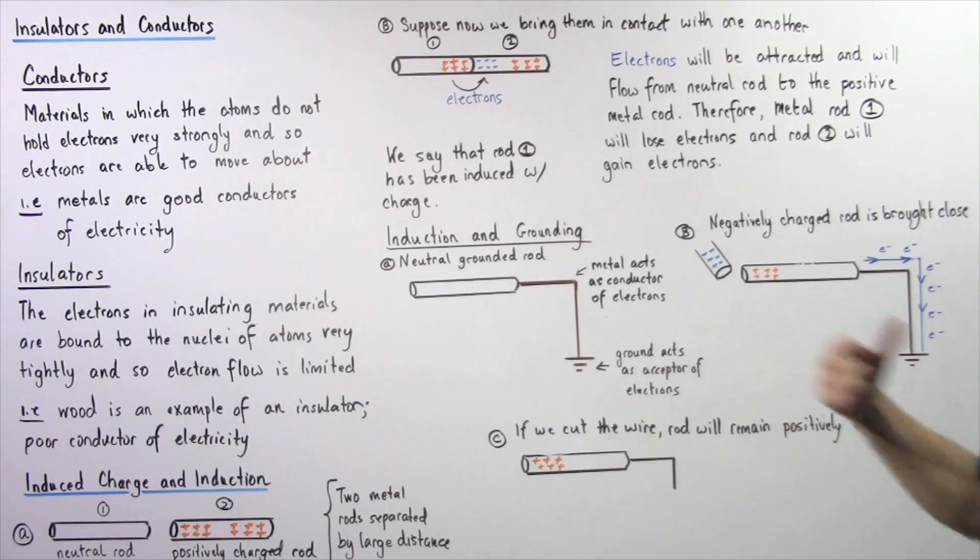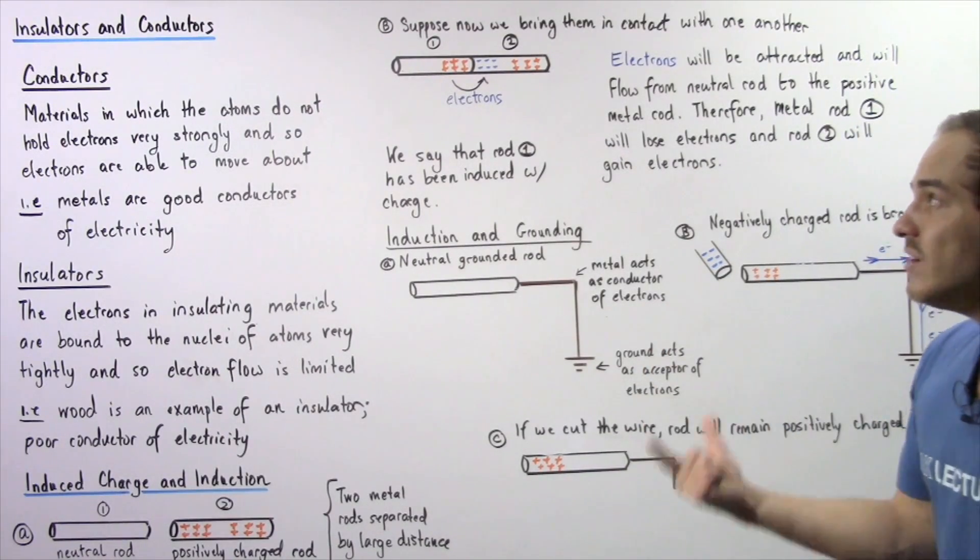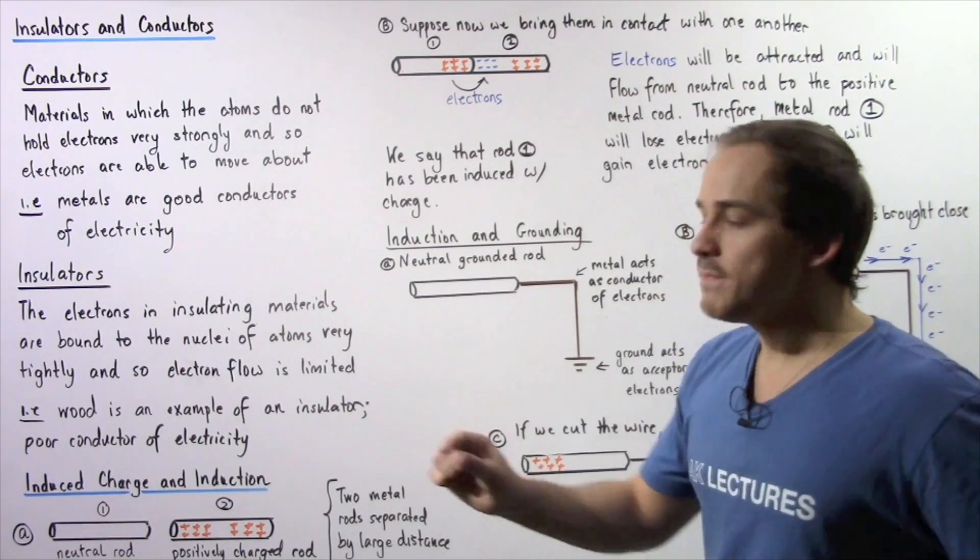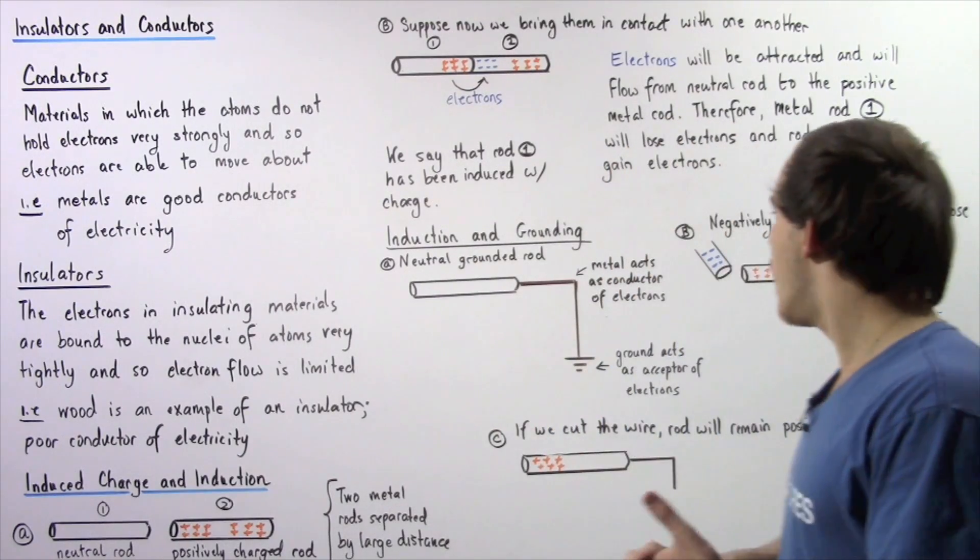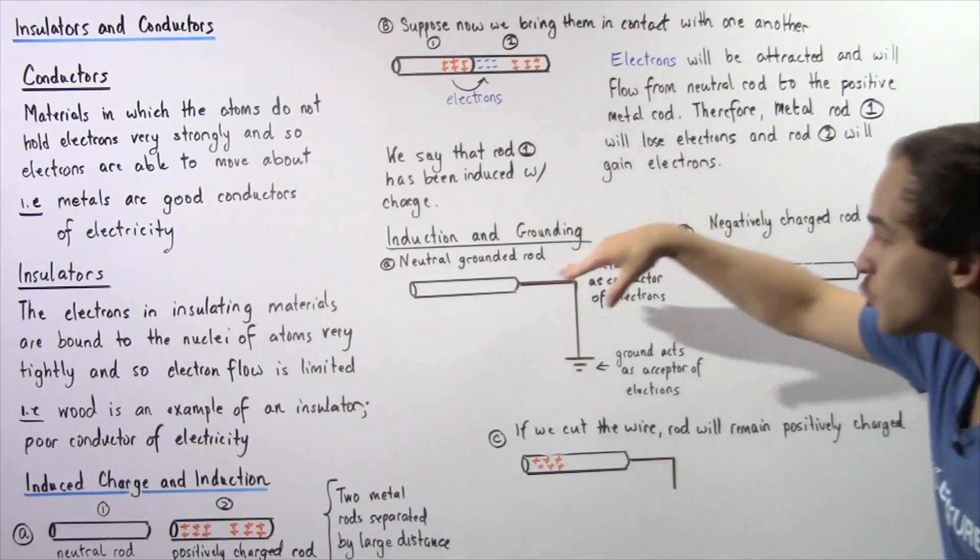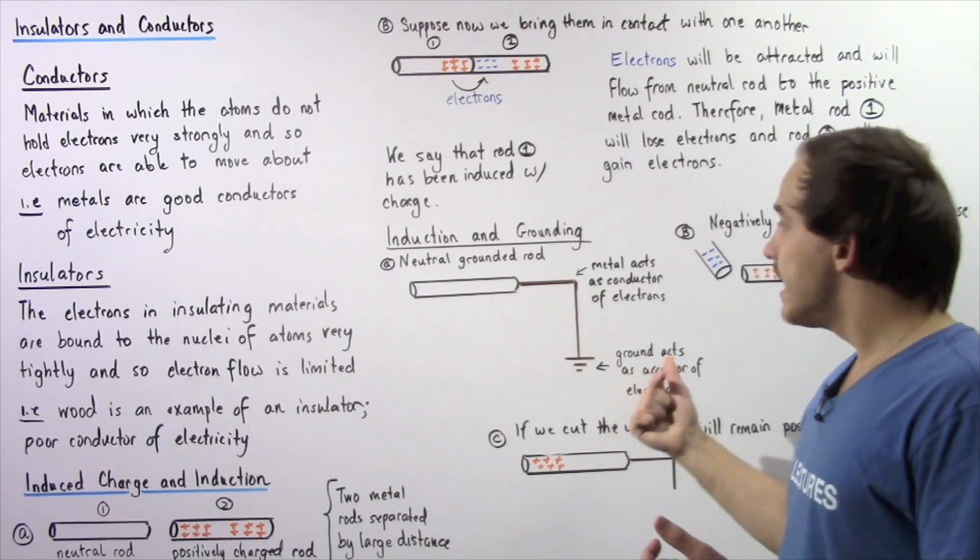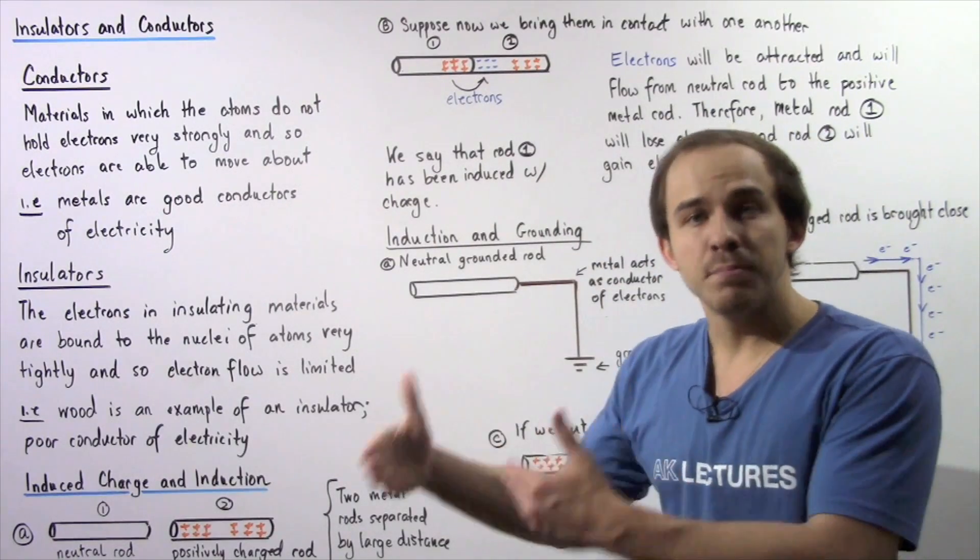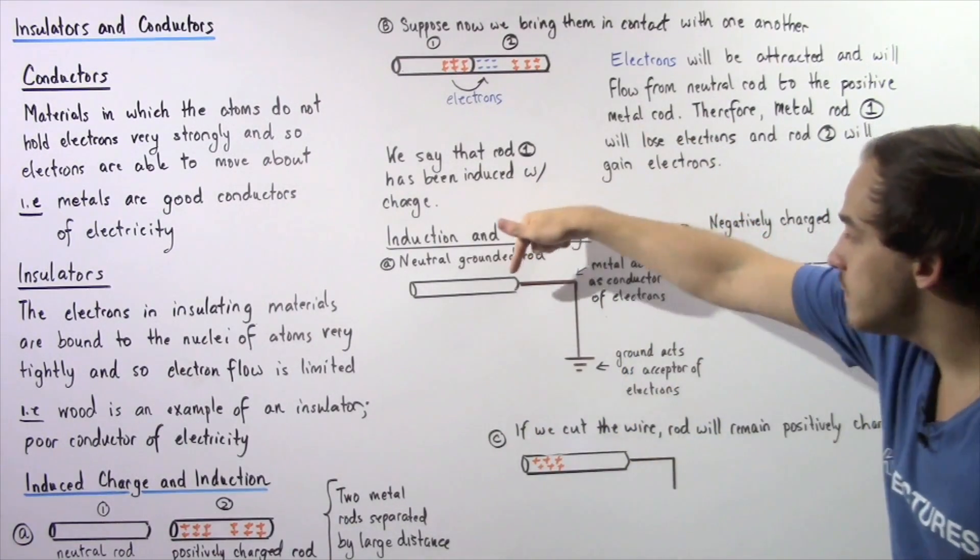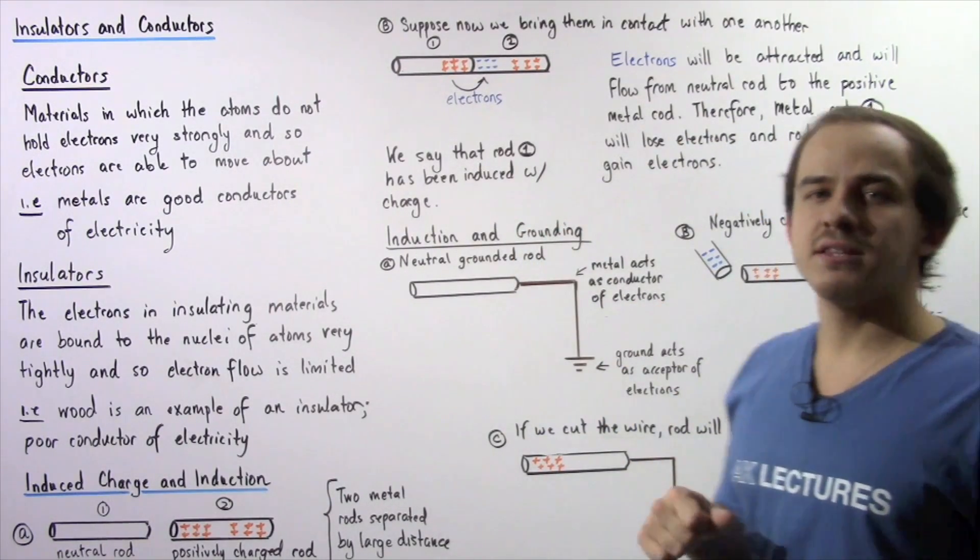So this concept, this process, is known as induction in which we don't actually physically touch our two objects as shown, and we ground that object so that those electrons have a place to go. They travel via the wire all the way to the ground.